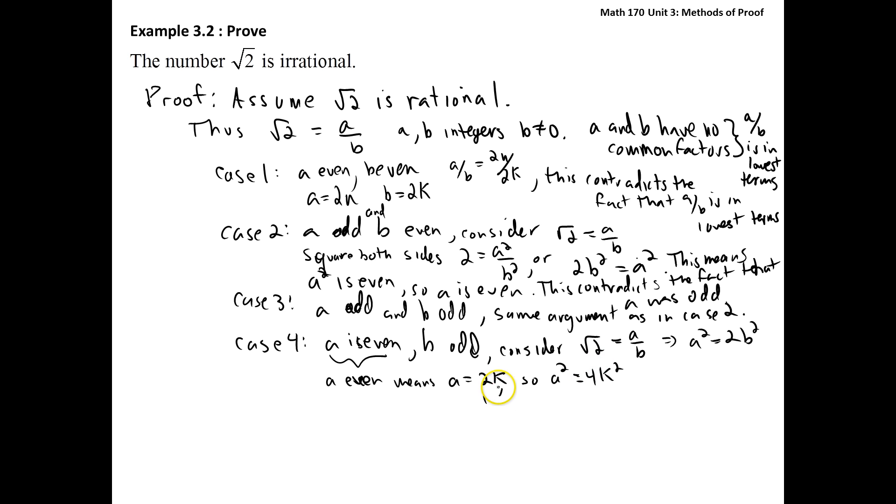If a squared is 4k squared, then what we're looking at is 4k squared is 2b squared. Divide by 2. And what we get is that 2k squared is b squared. Or, that b squared is even. And if b squared is even, then of course, from what we saw earlier, we'll have then that b is even.